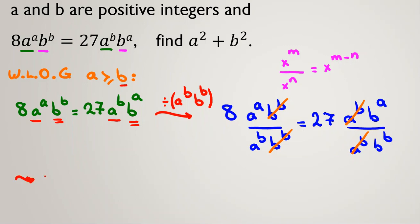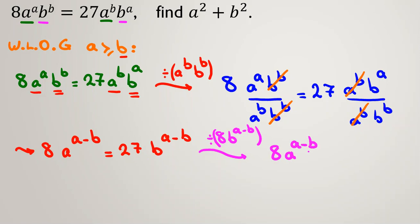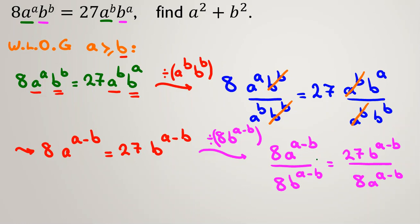Applying the power rule — the bases are equal so we subtract the powers — we get: 8 times a to the (a minus b) equals 27 times b to the (a minus b). Now I want to take numbers to one side and variables to the other. Dividing both sides by 8 and by b to the (a minus b), we get a to the (a minus b) over b to the (a minus b) equals 27 over 8.